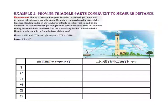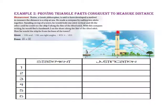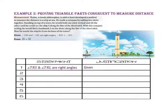With this compass setting, he would find landmark L on the shore along the line of the tilted stick. How far would the ship be from the base of the tower? Let's start with the given information. Angles TRS and TRL are right angles. Because all right angles are congruent, angle TRS is congruent to angle TRL.